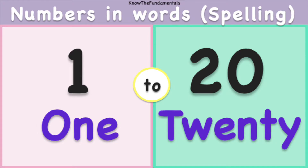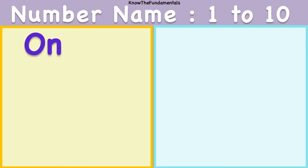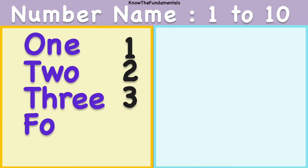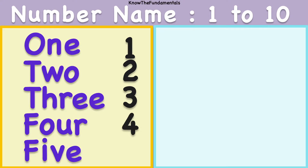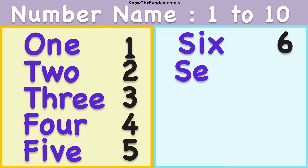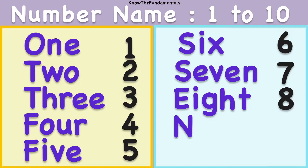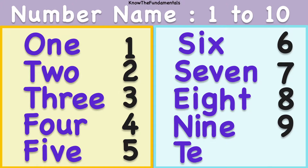Numbers in words from 1 to 20. O N E - 1. T W O - 2. T H R E E - 3. F O U R - 4. F I V E - 5. S I X - 6. S E V E N - 7. E I G H T - 8. N I N E - 9. T E N - 10.